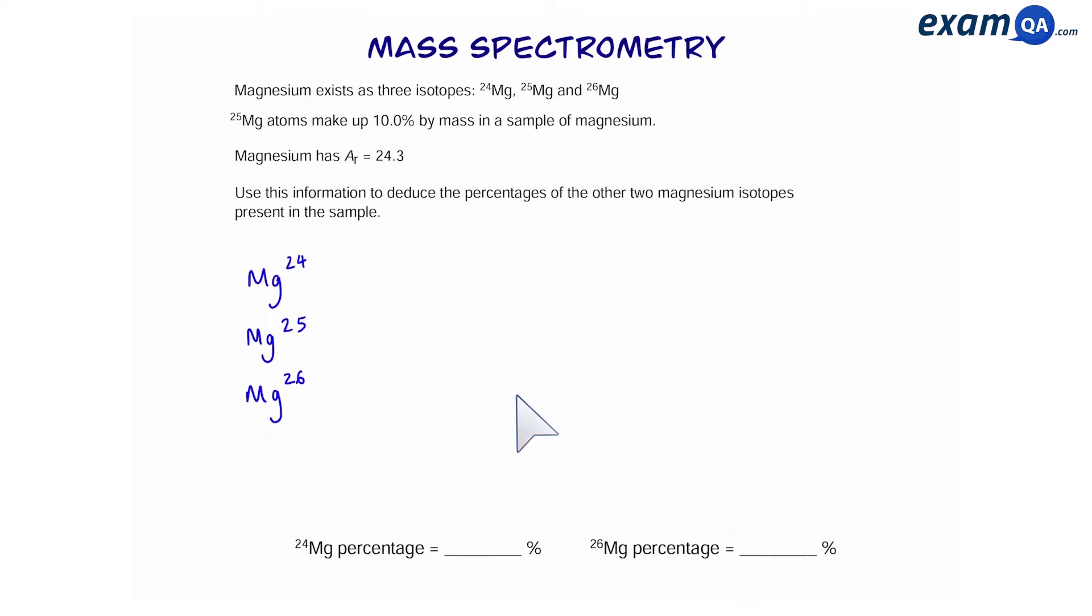So we're going to write down the isotopes. And we know that 25 is 10%. That means out of 100, 24 and 26 should make up 90%. So we'll call one of them x and the other one will be 90 minus x. We know that the average is 24.3.